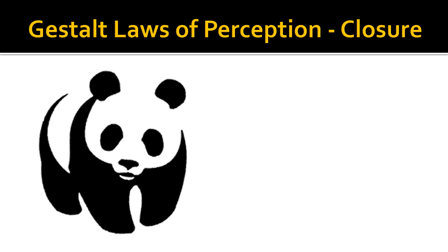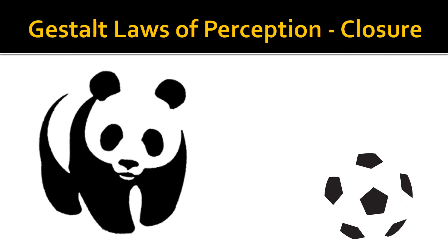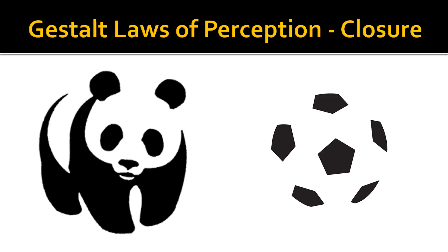This image is an example of closure. The image is actually not closed — there are gaps — but we tend to perceive it as a whole image of a giant panda. This is the logo of the World Wildlife Fund. Similarly, another incomplete image is perceived as a closed image of a football.